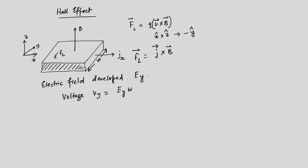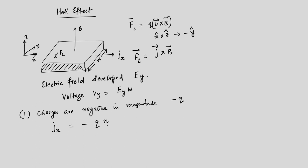Consider case one: suppose the charges are negative in magnitude, which are electrons. The charge is −q, and in that case J_x = −q·n·v_x, where q is the magnitude of the charge and n is the density of carriers.